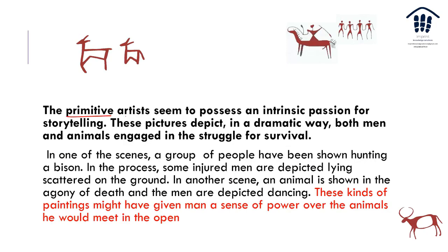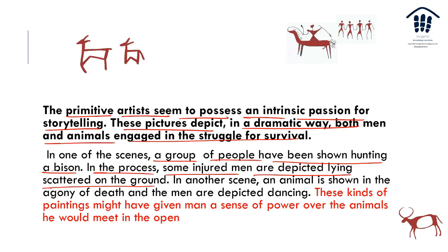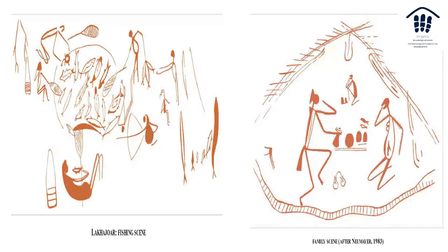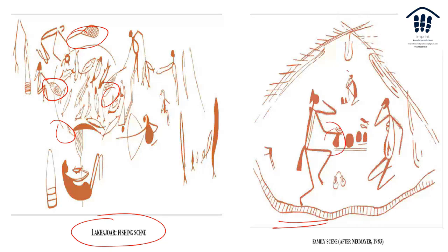The artists showed men rejoicing, appearing full of youth. Animals are shown more majestic and youthful than they perhaps were, telling us that humans of that time really adored animal life. The primitive artist seemed to possess an intrinsic passion for storytelling — these pictures dramatically depict animals and men engaged in survival. In one scene, a group of people are shown hunting a bison while some injured men lie scattered on the ground; in others, an animal is shown in the agony of death while men celebrate. A fishing scene at Lakhudiyar shows people fishing with nets; a family scene shows people sitting and having food.